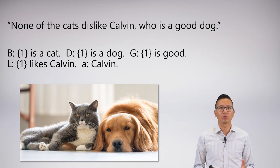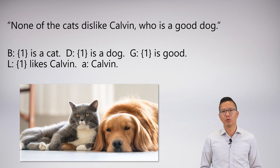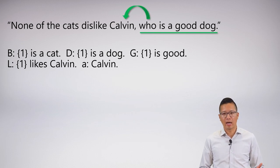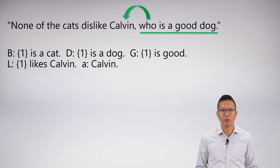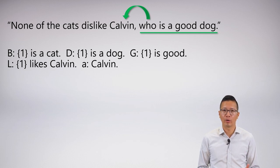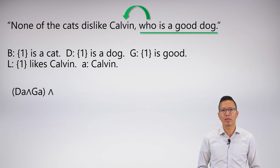Let's look at an example: 'None of the cats dislike Calvin, who is a good dog.' Things that jump out immediately: there's a non-restrictive clause — 'who is a good dog' — and that's Calvin. I've also used a name letter here. The first thing to symbolize is 'Calvin is a good dog.' With name letters, you do not need a quantifier — you shouldn't even have one. I just say Calvin is a dog and Calvin is good. That's it — no quantifier needed.